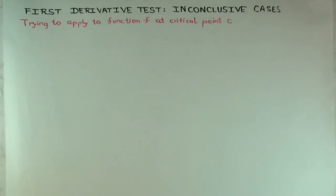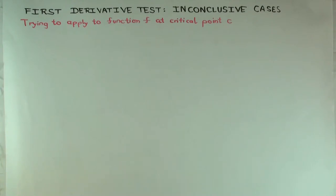In this talk, I'm going to consider some inconclusive cases for the first derivative test. What do I mean by inconclusive? The test doesn't tell you whether it is a local max or local min — or neither. It sort of leaves you ambiguous. Inconclusive doesn't mean the case where you know it's not a local max or min; it means the case where you don't know.